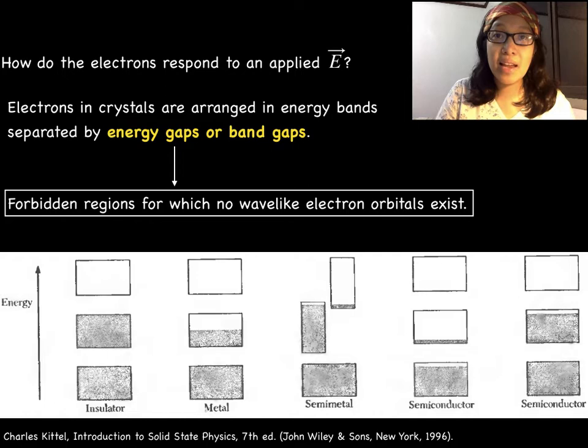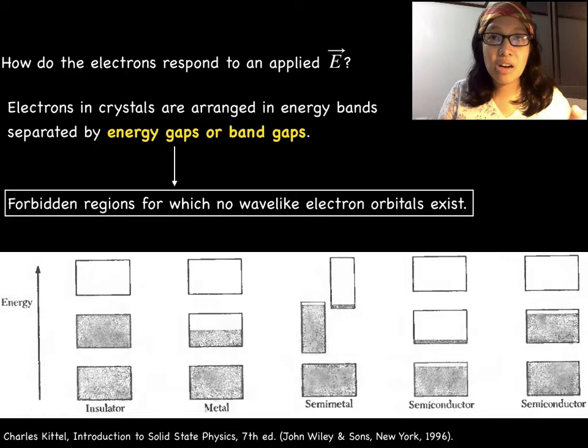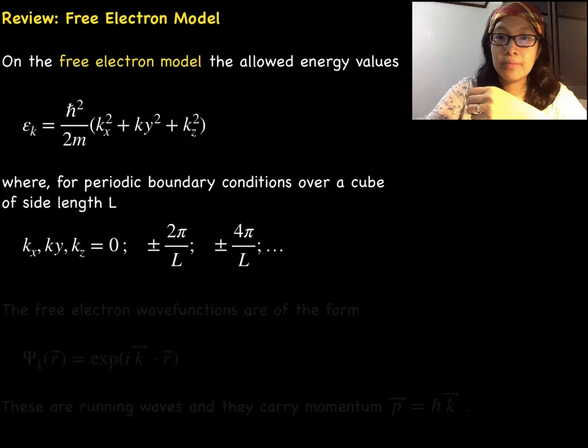The crystal is considered a metal if one or more bands are partly filled or partly empty. The crystal is a semi-metal or semiconductor if one or two bands are slightly filled or slightly empty.